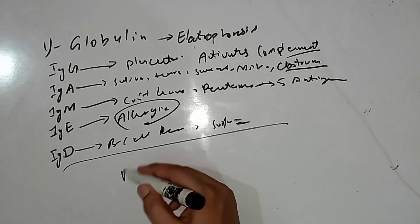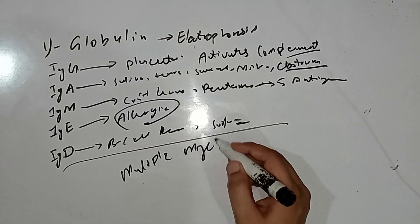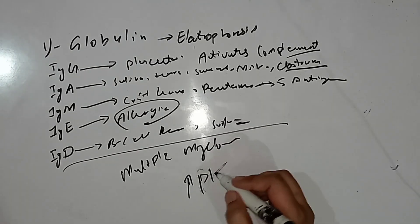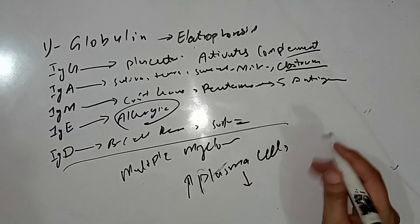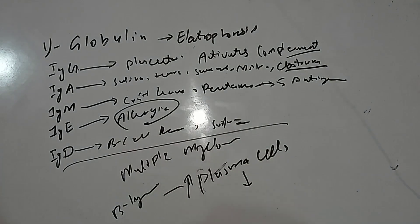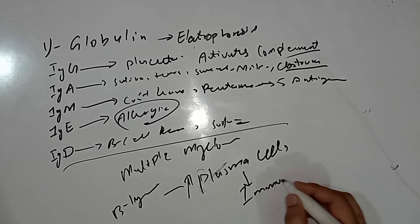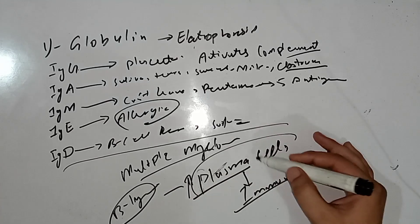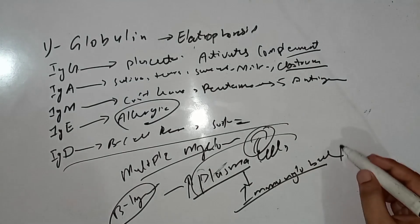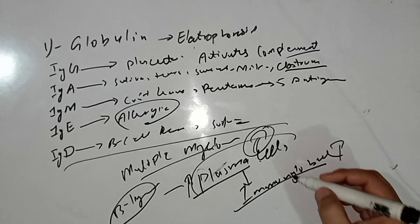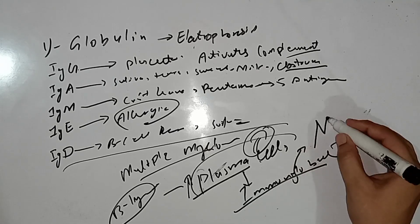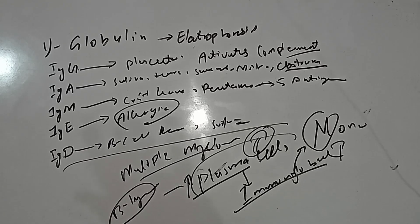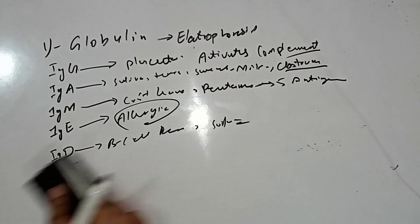Multiple myeloma is a disease characterized by uncontrolled production of plasma cells, which are derived from B lymphocytes. These plasma cells lead to increased release of immunoglobulins. Because one specific type of immunoglobulin increases, a single sharp M band (monoclonal band) appears on electrophoresis in multiple myeloma patients.